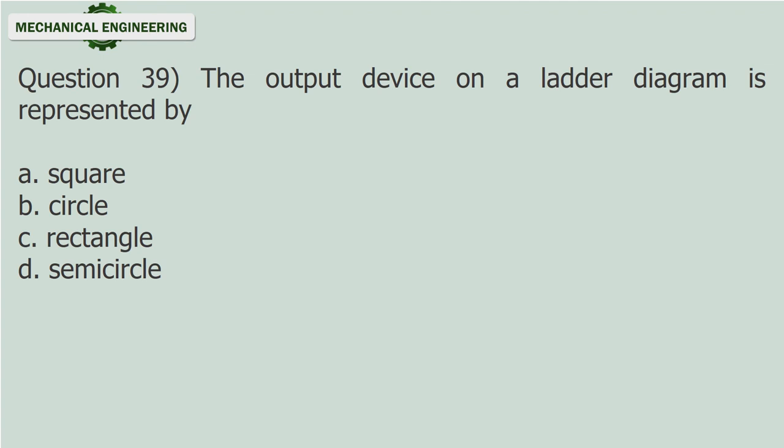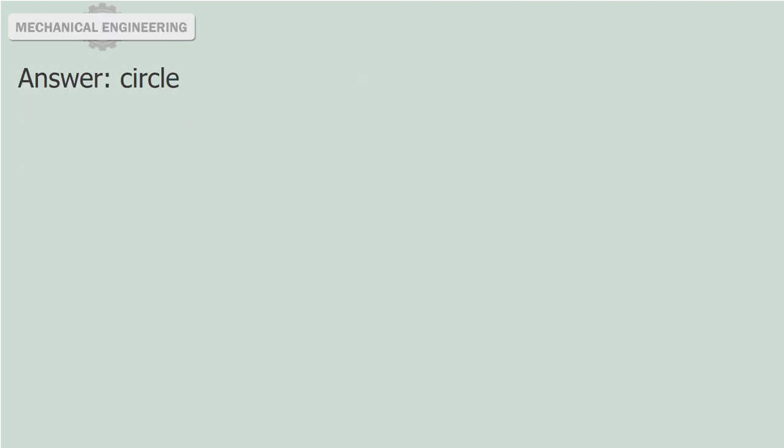Question 39: The output device on a ladder diagram is represented by: A. Square. B. Circle. C. Rectangle. D. Semi-circle. Answer: Circle.